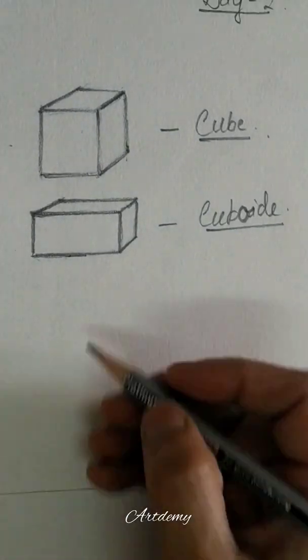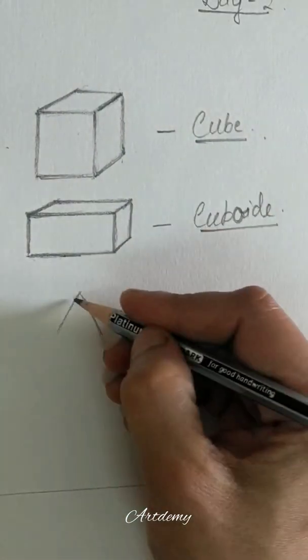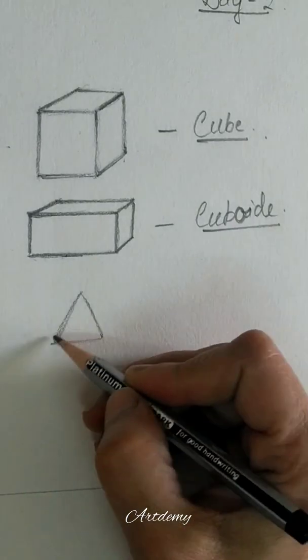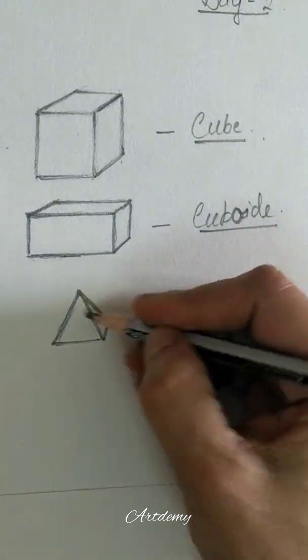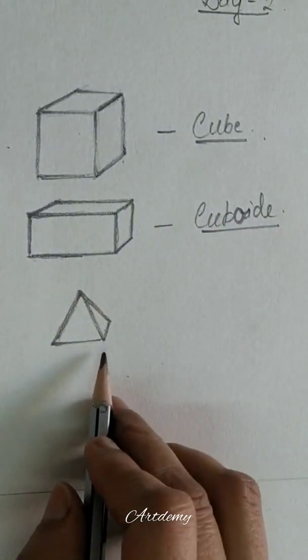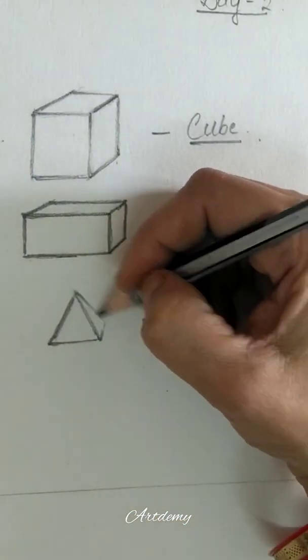Okay, now we'll be making a pyramid. So first we have to draw a triangle, then any line behind it, and we'll join it. It makes the pyramid.